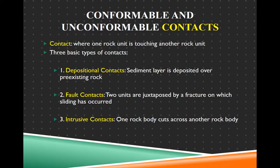There are three basic types of contacts. First, there's a depositional contact — this is when sediment is deposited on rock that was already there, so that sediment is contacting the rock it was deposited on. The second type is a fault contact — this is when two different rocks are touching because a fault occurred, broke the rock, and moved it so it's now touching something else.